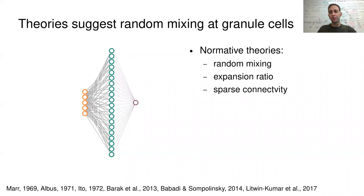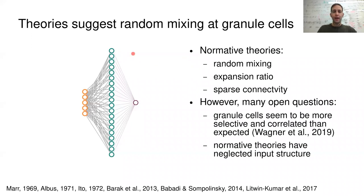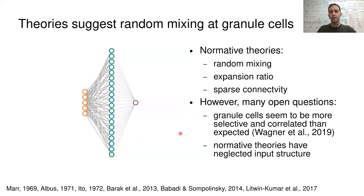However, there are some important open questions. For example, granule cells seem, in recordings in vivo, to be much more selective and correlated than what you would expect based on random mixing theories. Also, previous normative theories have neglected the statistical structure of the input by assuming the input was random and uncorrelated. By the end of this talk, I hope to convince you that these two points are actually more related than they seem at first sight.